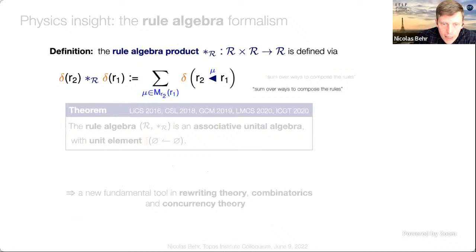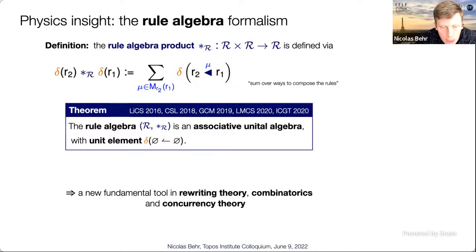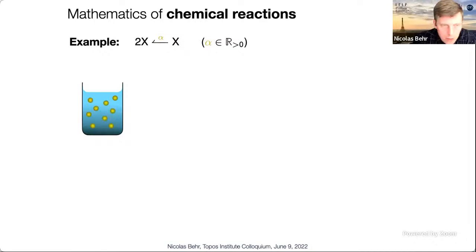By composing rules I mean partially overlapping them and performing a computation that reads out the net effect of this interaction. This depends on the semantics and has to be defined; compositionality — one half of it — is precisely giving such a composition operation. The second half of compositionality is giving conditions under which this operation is strictly associative, because then the rule algebra becomes an associative unital algebra, a necessary first step for continuous Markov chain theory.